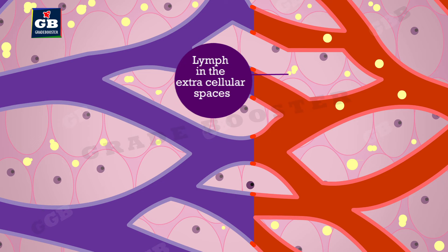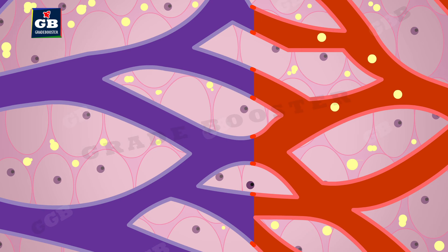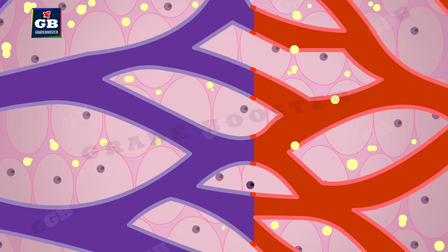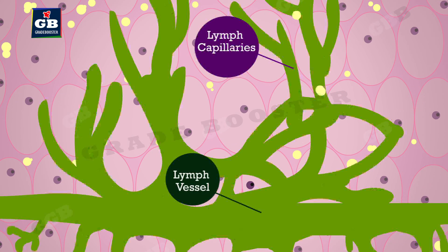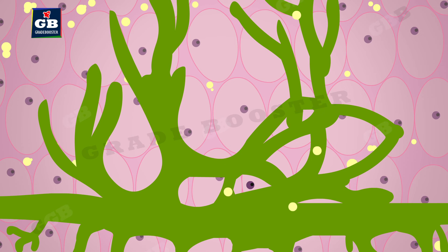Apart from blood, there is one more fluid involved in transportation — that is lymph. It is a colorless fluid similar to plasma of blood. It is formed by the plasma that has escaped from the capillaries into the intercellular spaces. This fluid is called lymph, and it enters into lymphatic capillaries and joins with lymph vessels,